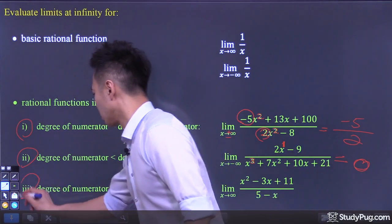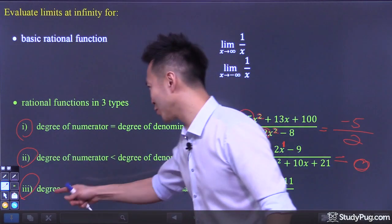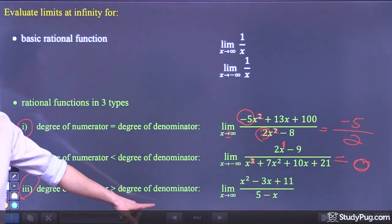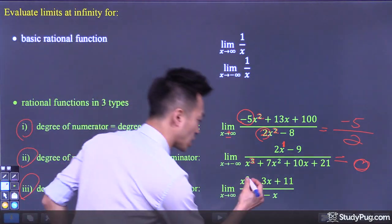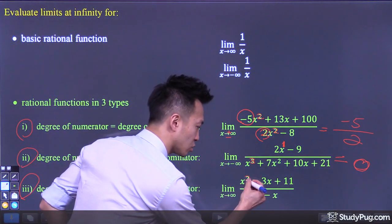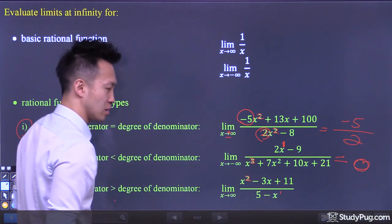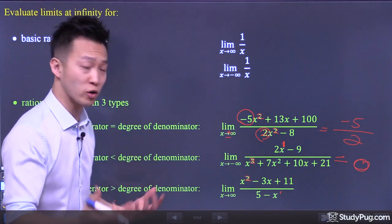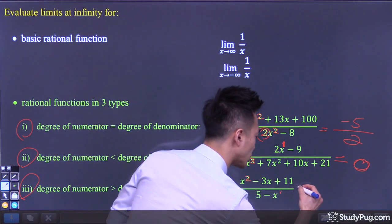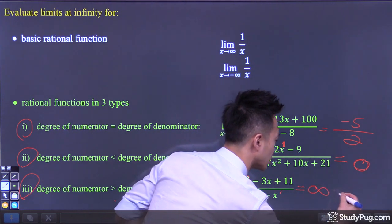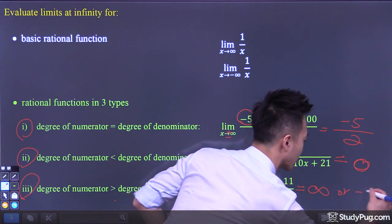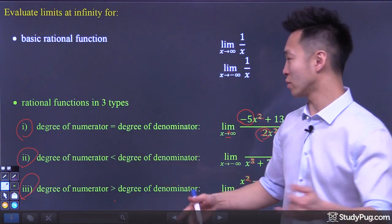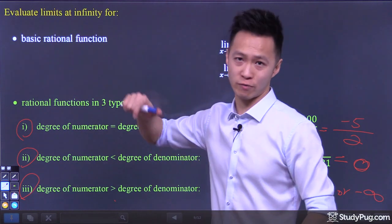Type 3 rational function is when the degree of the numerator is greater than the degree of the denominator. For example, when the degree of the numerator is 2 and the degree of the denominator is 1 — 2 is greater than 1. By using the highest power rule, we'll be able to show that this type of limit is always going to be equal to either positive infinity or negative infinity. So that was using the highest power rule to prove each type of rational function.